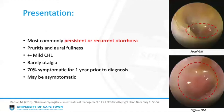The majority of patients present with persistent or recurrent otorrhea, which may be malodorous. Some patients can be completely asymptomatic with granulations seen as an incidental finding on routine otoscopy. Other symptoms include pruritus, aural fullness, mild conductive hearing loss, and very rarely otalgia.